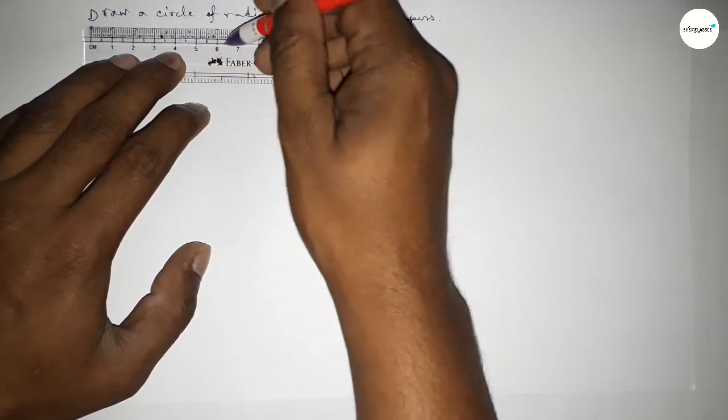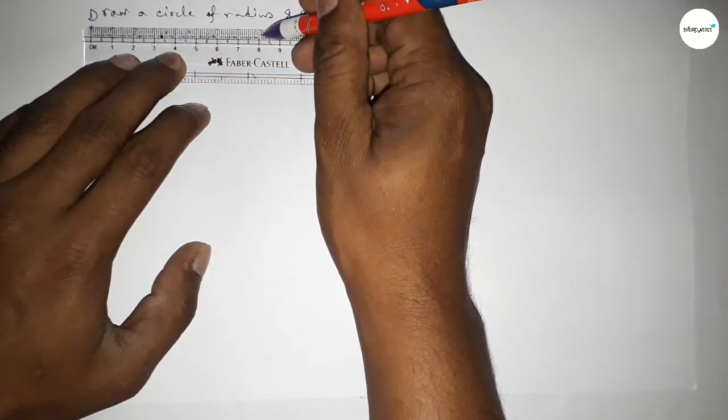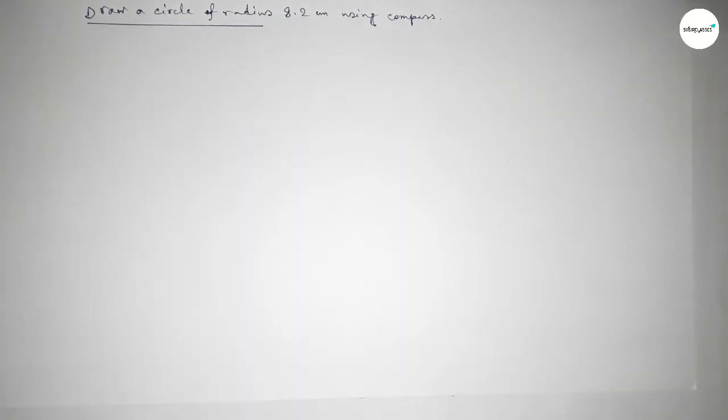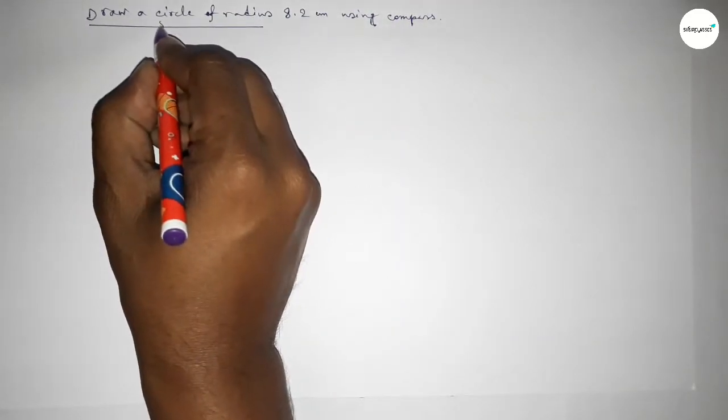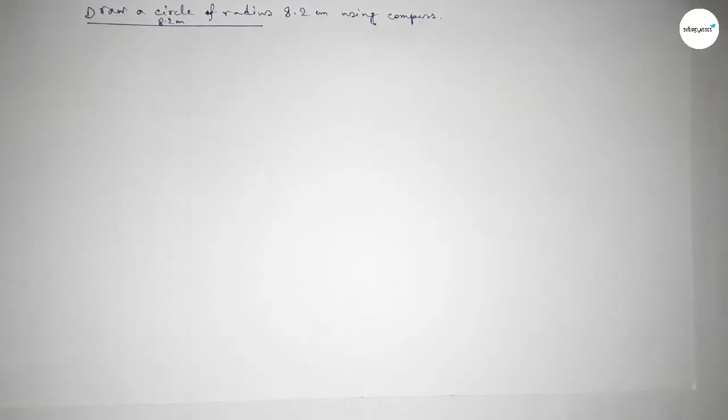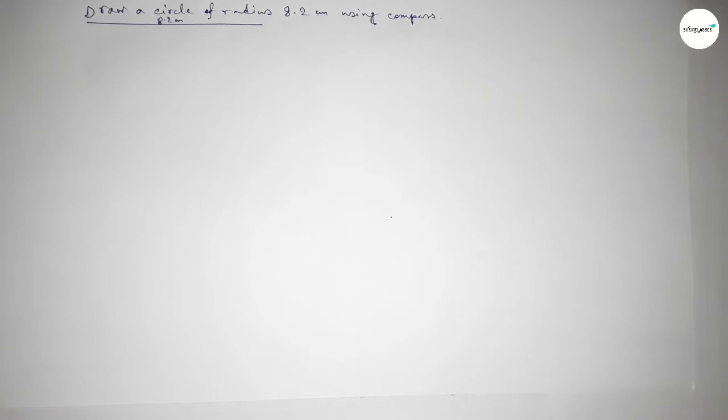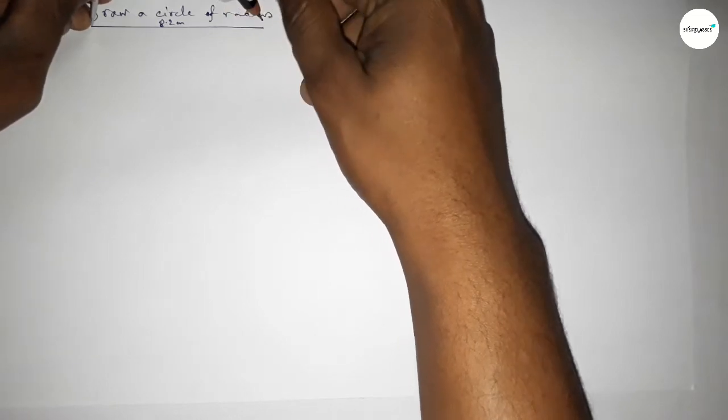Starting at 0, 1, 2, 3, 4, 5, 6, 7, 8, and this is 8.1, 8.2. So this is 8.2 centimeters. This line is 8.2 centimeters. Now taking here a point. Next, taking the length 8.2 centimeters by using compass.